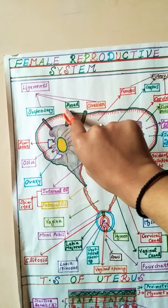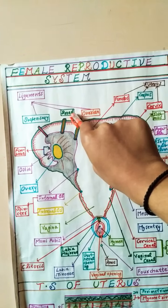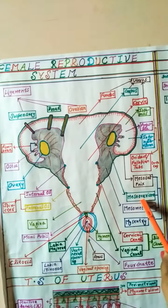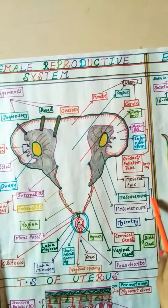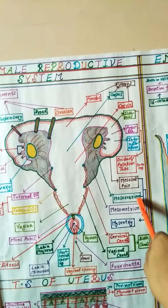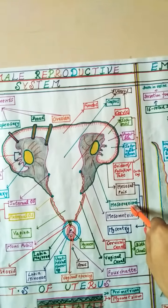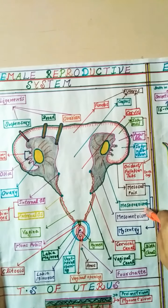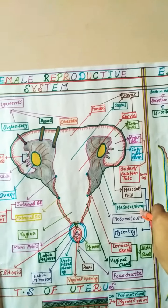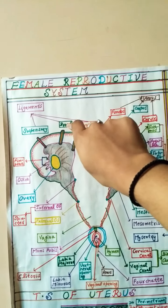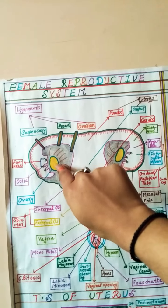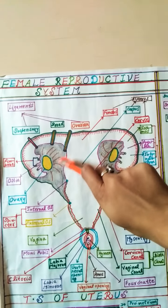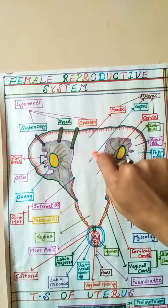The broad ligament is a double fold of peritoneum, also called the meso ovarium. Here you can see the meso ovarium — it is a double fold of peritoneum with the help of which the ovary is attached to the lateral wall of the abdomen.